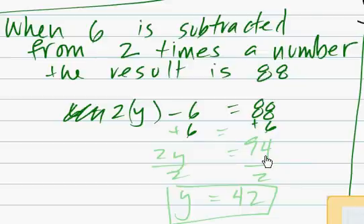So we'll just add plus 6 on this side, so that gives us plus 6 on this side, gives us 94.